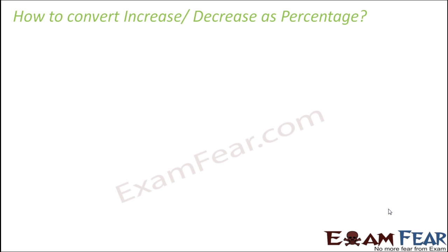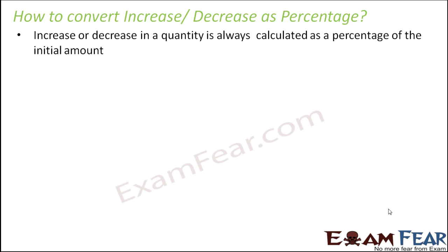Now how do we convert the increase or decrease of a quantity as a percentage? The increase or decrease in a quantity is always calculated as a percentage of the initial amount. This is important — it has to be a percentage of the initial amount because the increase or decrease is happening on the initial amount. For example, if you spent 40 percent of your salary, this decrease has happened on your salary, which is the initial amount.